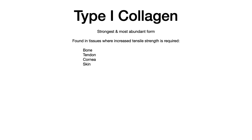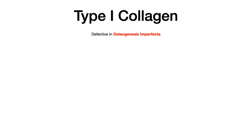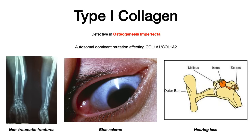The disease that comes up when you have a problem with type 1 collagen is osteogenesis imperfecta. This is a favorite of test writers because it's got very unique symptoms. This is an autosomal dominant mutation that affects the collagen 1A1 or 1A2 gene. What's very high yield for you to memorize for test day is the classic constellation of symptoms. You get non-traumatic fractures, meaning the person will have a fracture without any inciting trauma. These fractures occur seemingly randomly because the bone is weak due to a defect in type 1 collagen. You also see blue sclera.